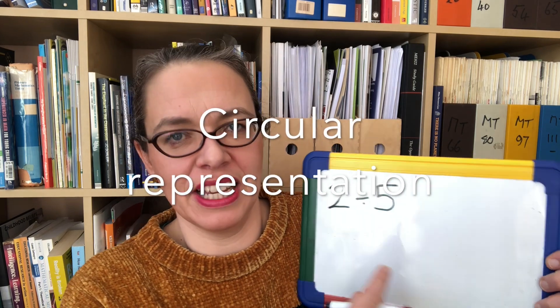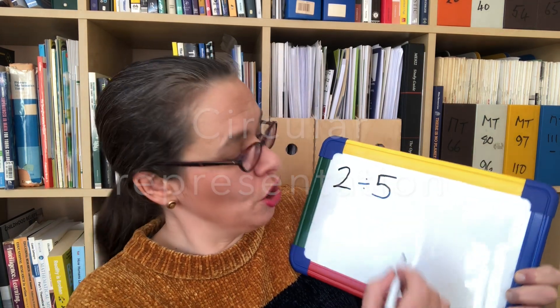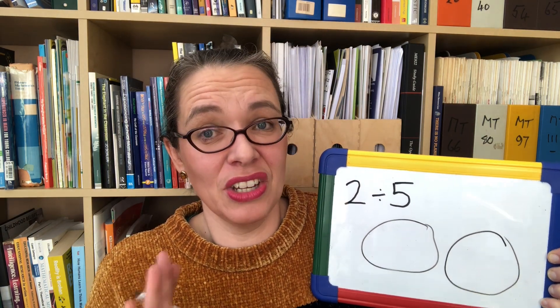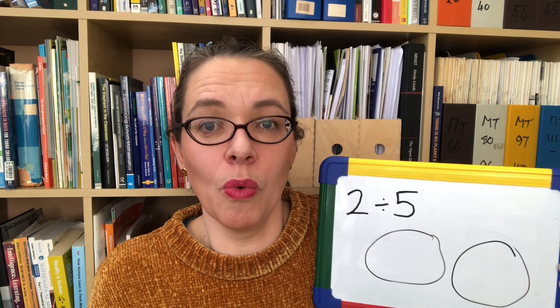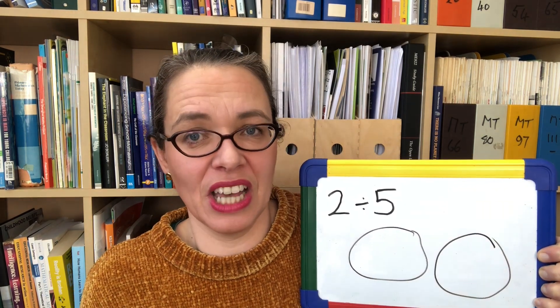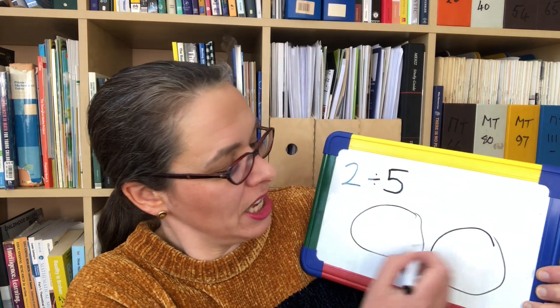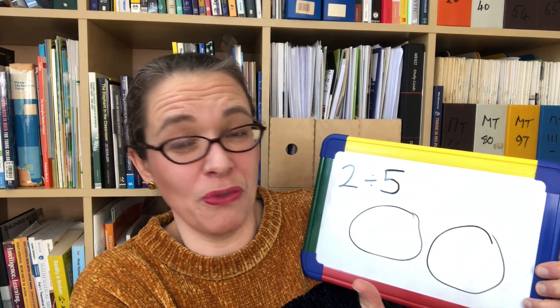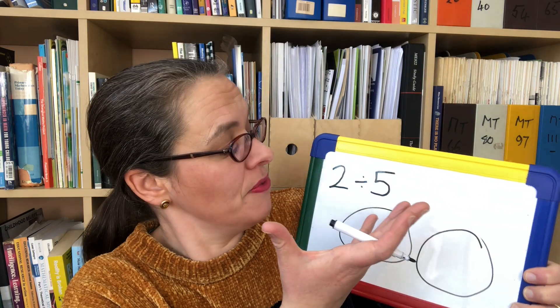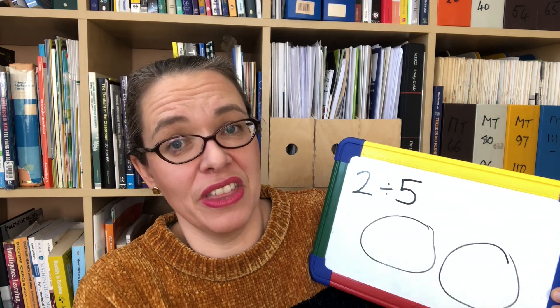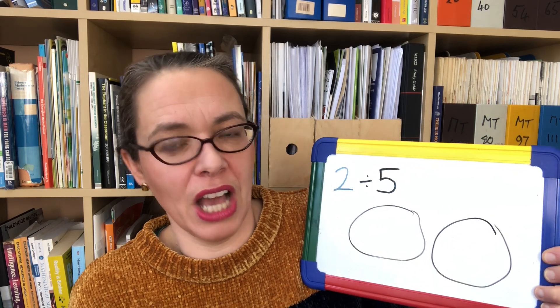Let's look at 2 divided by 5 with a circular representation. Imagine we've got two pizzas and we're trying to share them fairly between 5 people. Children may cut these in half and then realise they've only got 4 halves, so there's not enough for each of the 5 people to have 1 half. Therefore, the answer must be smaller than a half.